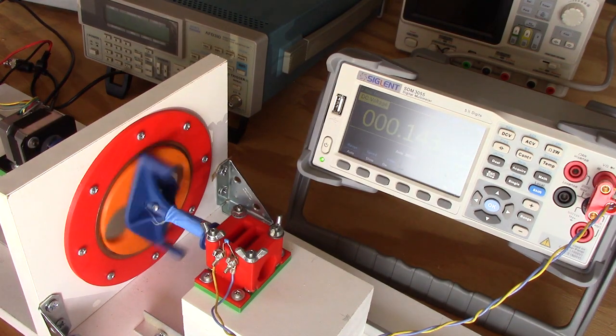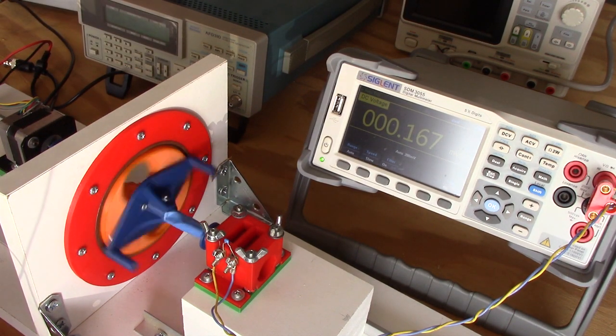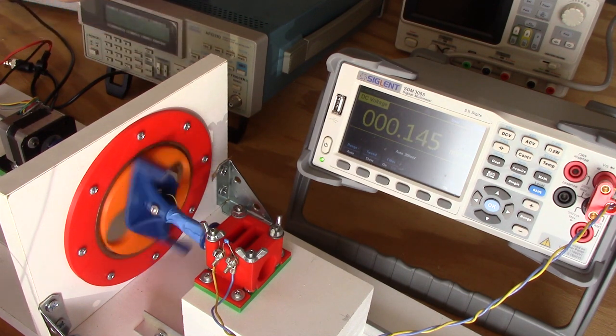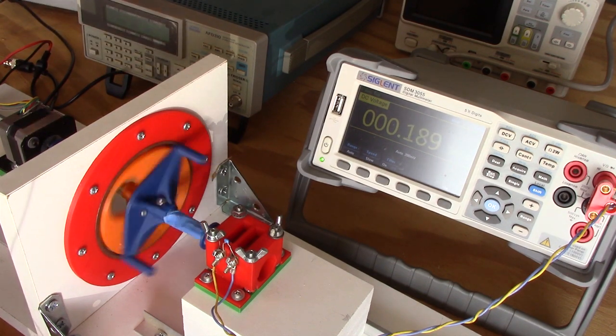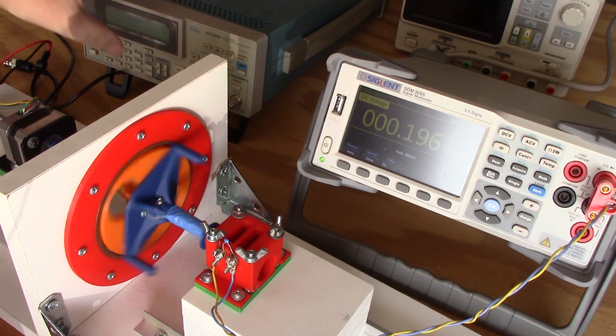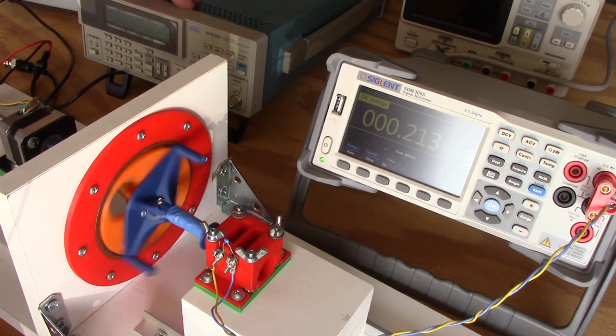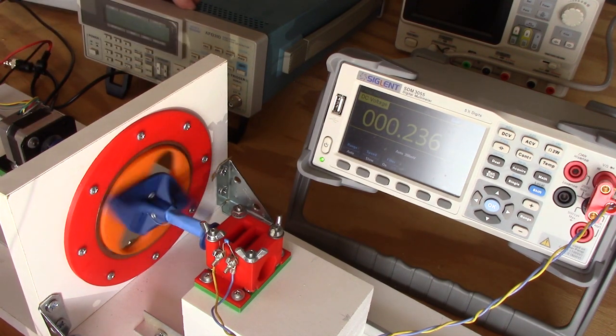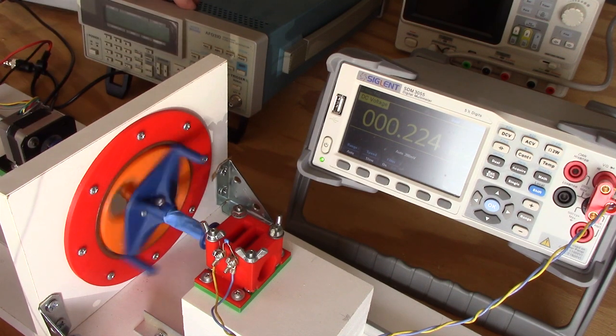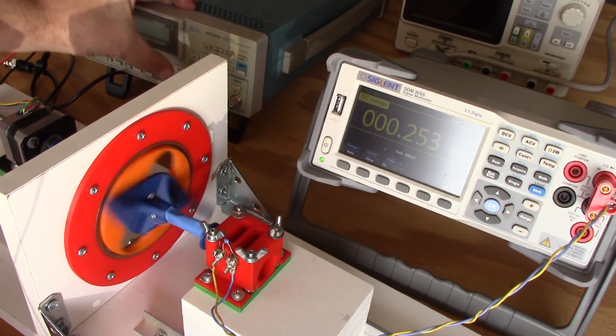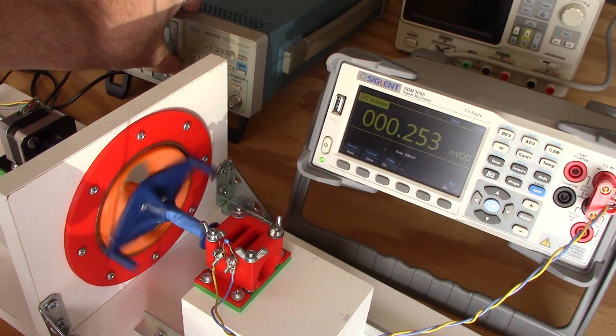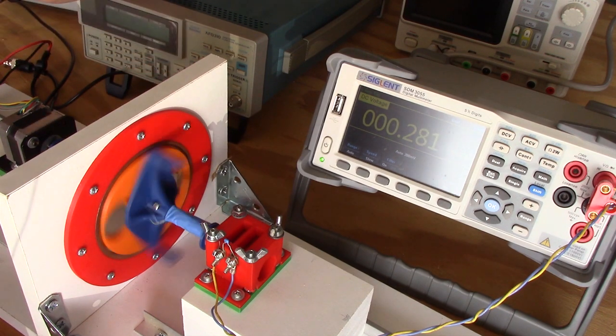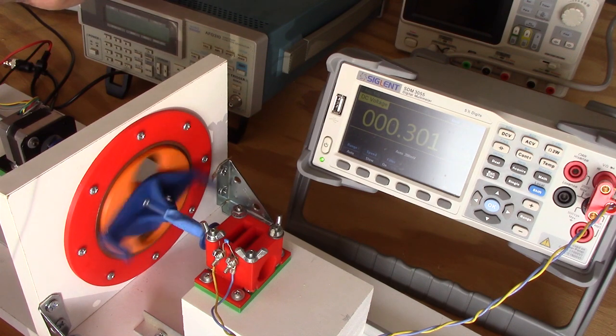Okay, right now we're at 800, 900, 1000. Oops, wrong button. Now we're 1000. 1100. 1200. 1300. 1400. 1500. 1600.